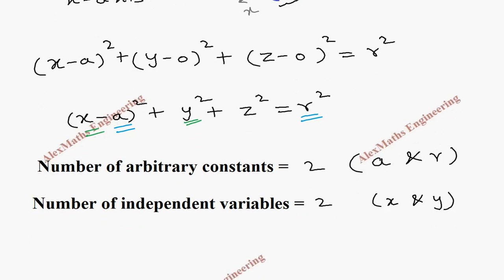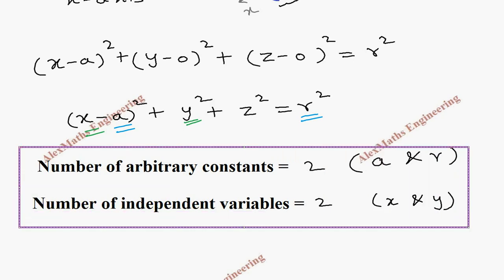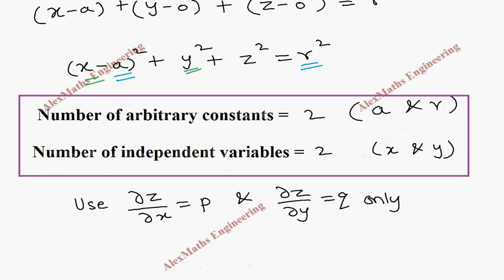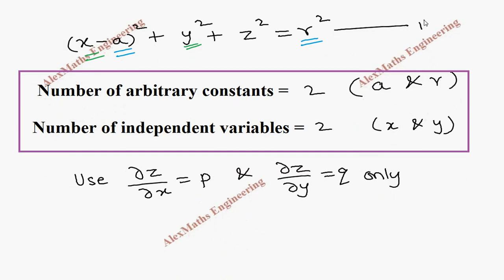Since the number of arbitrary constants and number of independent variables are the same, to eliminate arbitrary constants, we have to use only p and q, that is ∂z/∂x and ∂z/∂y which is termed as q. Let's take the expression as equation 1.